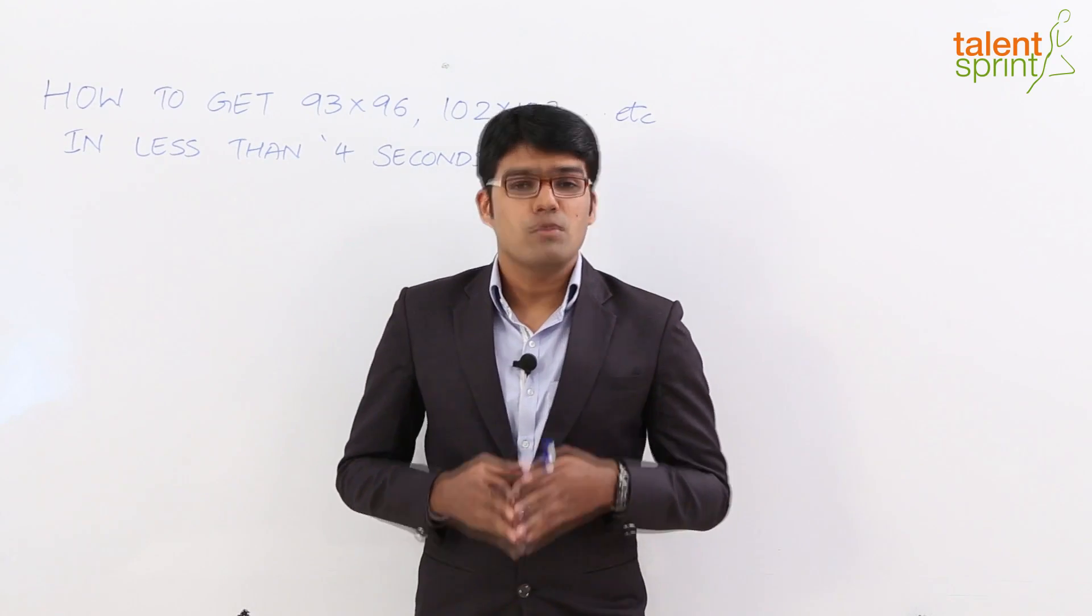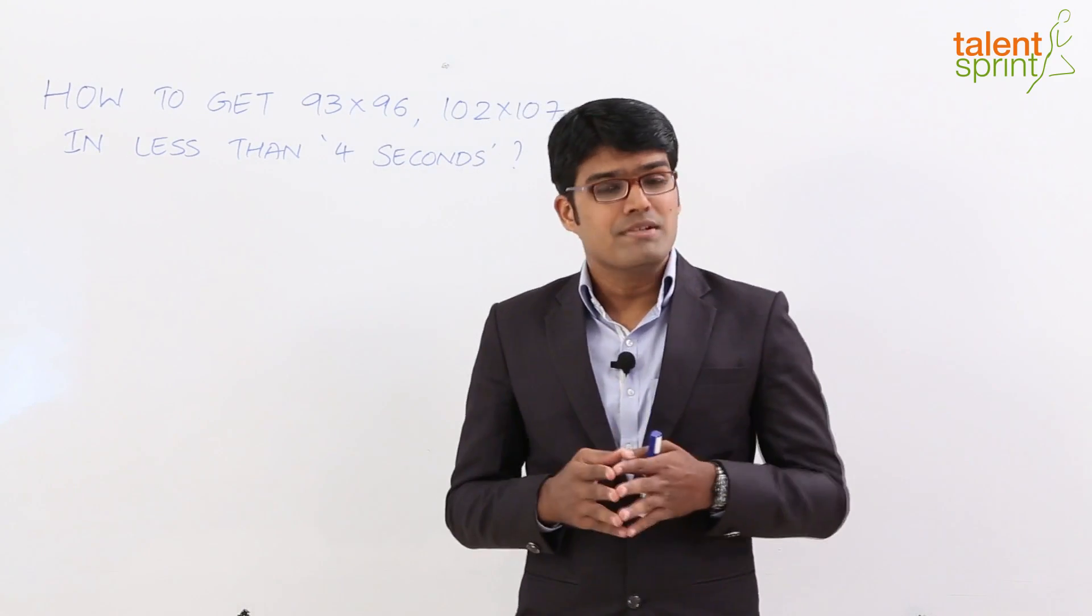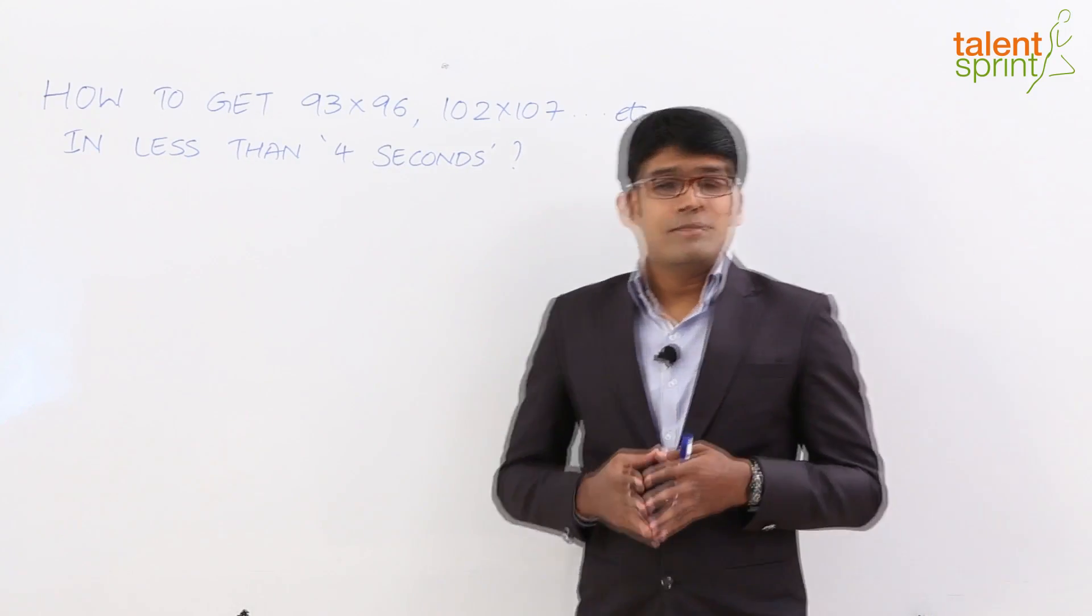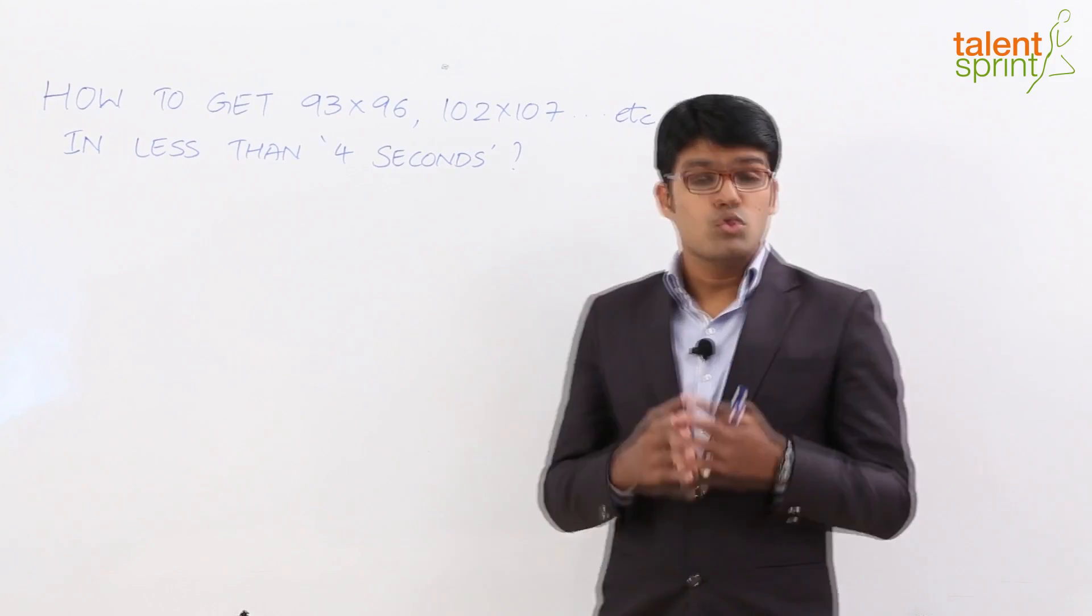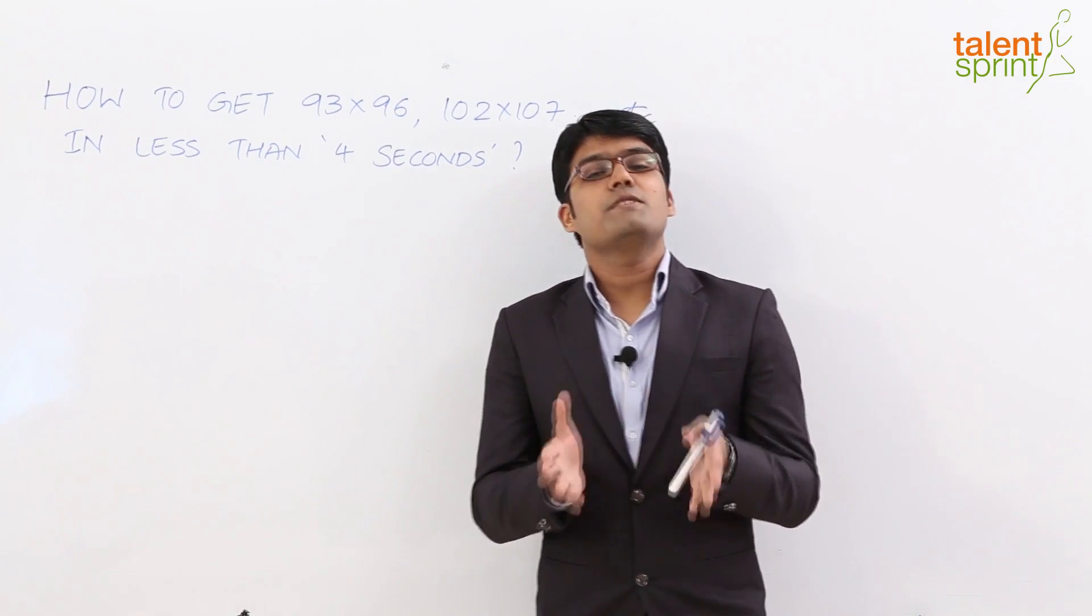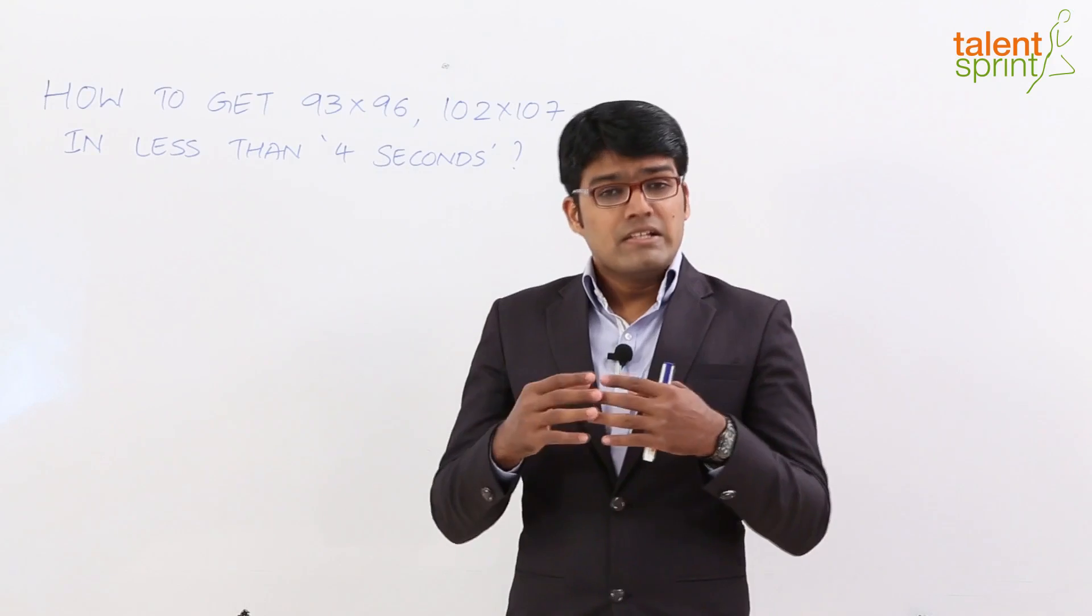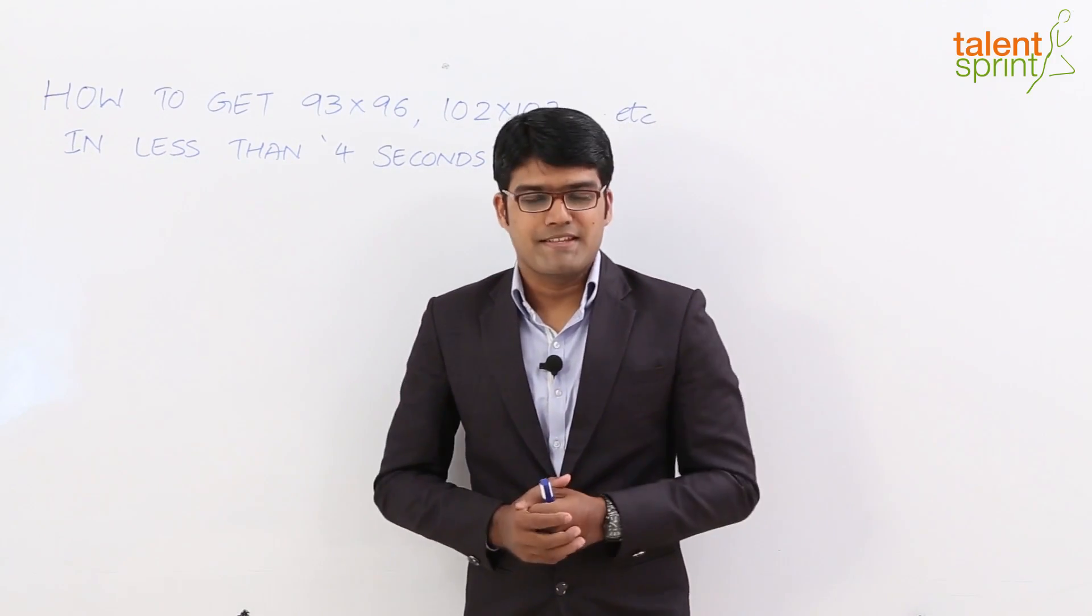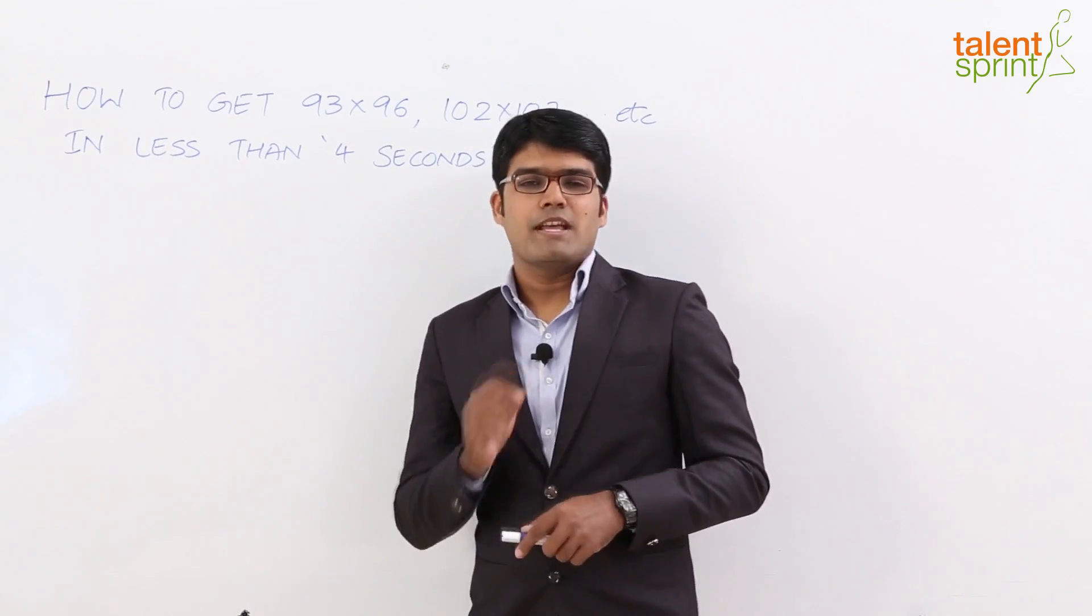In this session today, we are going to look at how to multiply numbers that are close to 100. For example, how do we multiply 93 with 96 or 102 with 107. So at the end of this video, you will be able to multiply such numbers which are close to 100 in just about 3 to 4 seconds. Let us understand how to do this with the help of a few examples.